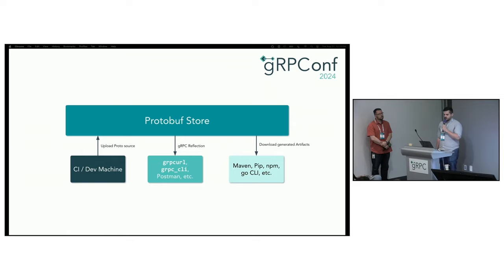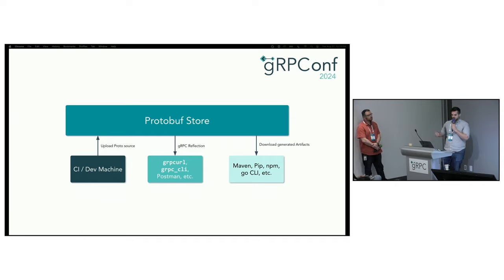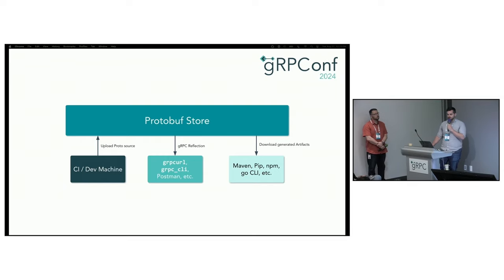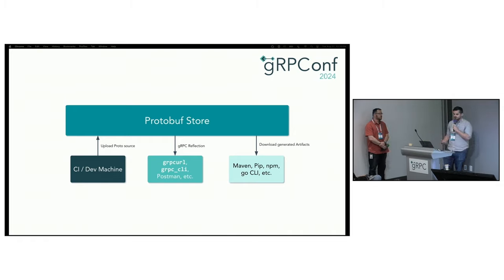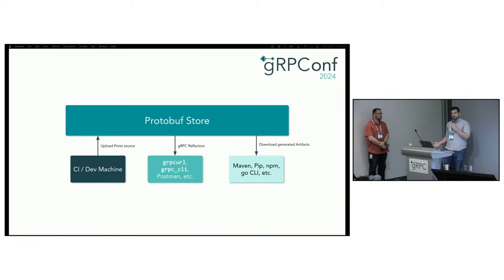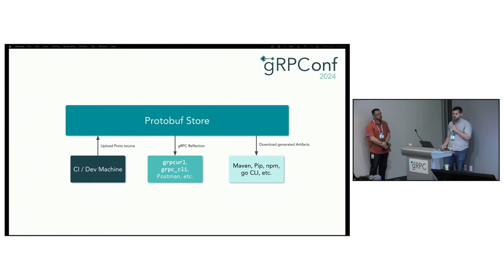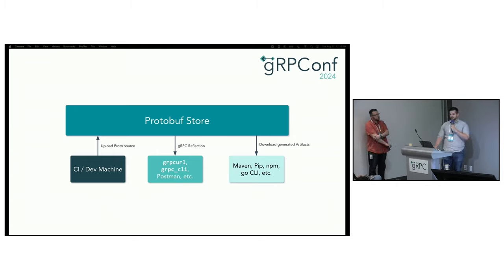Today we're going to be opening up a private preview. We'll send out an interest form you can sign up with to get access. That's going to include a read-only version of the reflection API pre-populated with the most useful public protocol buffers, including the gRPC standard protos, the Google APIs protos, and the XDS service mesh protos. This will give you a taste of what the registry will offer over the coming months and years. We'll also be releasing the CLI tool that you'll use to interact with the registry, which will allow you to download textual proto source code to your file system.